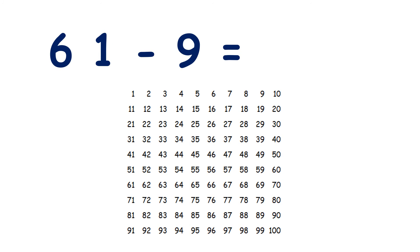Now 61 minus 9, so we find 61, subtract 10, and add 1, and we get 52.